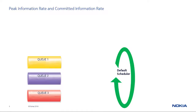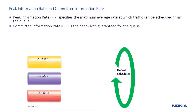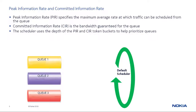The peak information rate, or PIR, and the committed information rate, or CIR, are the two key parameters. PIR specifies the maximum average rate at which traffic can be scheduled out of a queue; traffic received above this rate should expect to be dropped. CIR is the bandwidth that is guaranteed for a queue. The scheduler uses the depth of the PIR and CIR token buckets to help prioritize queues — one token is considered one byte of traffic.